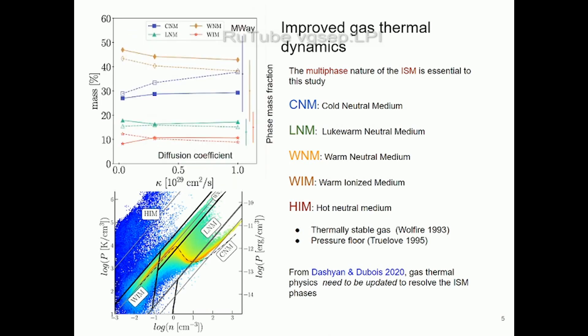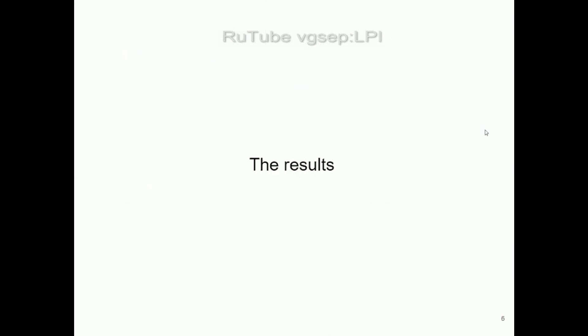One of the nicest results of this is that we managed to recover mass fractions for the different ISM phases that are more or less in agreement with what is observed in the Milky Way. These observational points have very large error bars because these are complicated observations, so for now we're well within the ballpark, but we're not yet able to disentangle between the different diffusion coefficients using this observable.